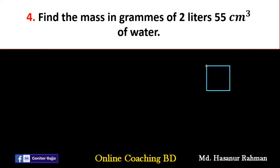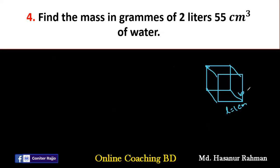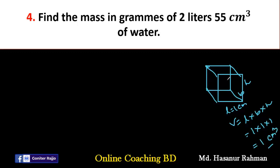If I draw a cube where the length is one centimeter, breadth is one centimeter, and height is one centimeter, then the volume will be length multiplied by breadth multiplied by height — that is one centimeter cube. If I put some water in this cube, then the amount of water will be one gram. So, we know that one centimeter cube of water equals one gram.